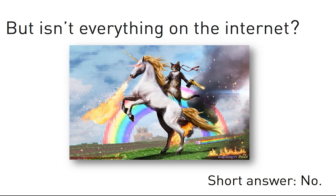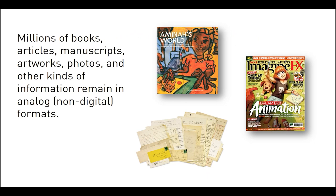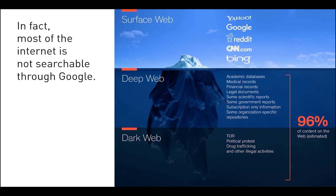But isn't everything on the internet? Short answer, no. In fact, there are millions of books, articles, manuscripts, images, and other sources of information that remain in analog form — they have not been scanned and they aren't available on the internet. Most of the internet is not searchable through Google or any search engine. Much of the internet consists of the deep web, and this includes academic databases, medical records, and legal documents.